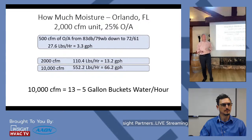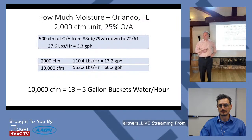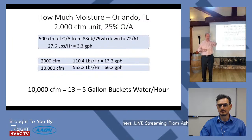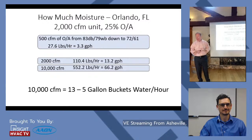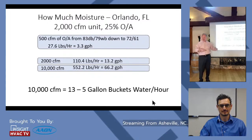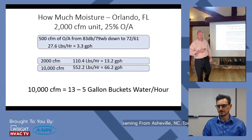Scale that up to a larger building — 10,000 CFM, a good medical office building — and you're talking 66 gallons per hour. That's 13 five-gallon buckets of water thrown into the space every hour on a design humidity day. I had an indoor pool project where the condensate was going to be dumped on a small grass area surrounded by concrete pavement — on a 140-ton pool unit, we were pulling out about 2,000 pounds per hour of condensate. They would have been making a swamp.